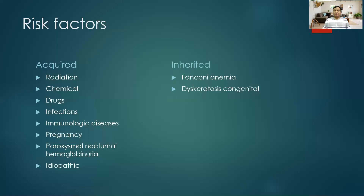Sometimes in clinical practice it is very difficult to identify the etiology, so we call it idiopathic aplastic anemia. There are also inherited conditions: Fanconi anemia, dyskeratosis congenita, Schwachman-Diamond syndrome, and telomeropathies — these can all cause aplastic anemia.